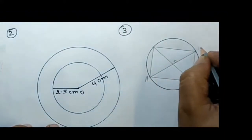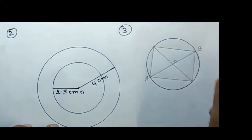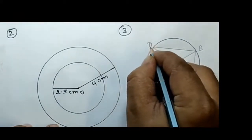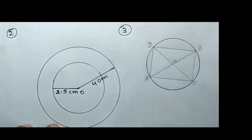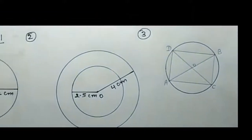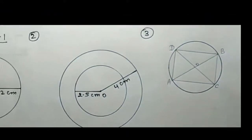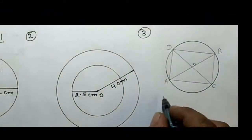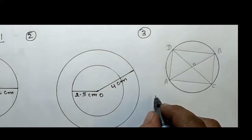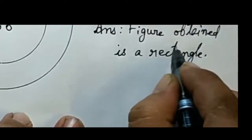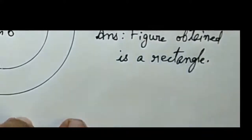Which figure is there? You can see points A, B, C, D. This figure is a rectangle. Here you can see the figure obtained is a rectangle.